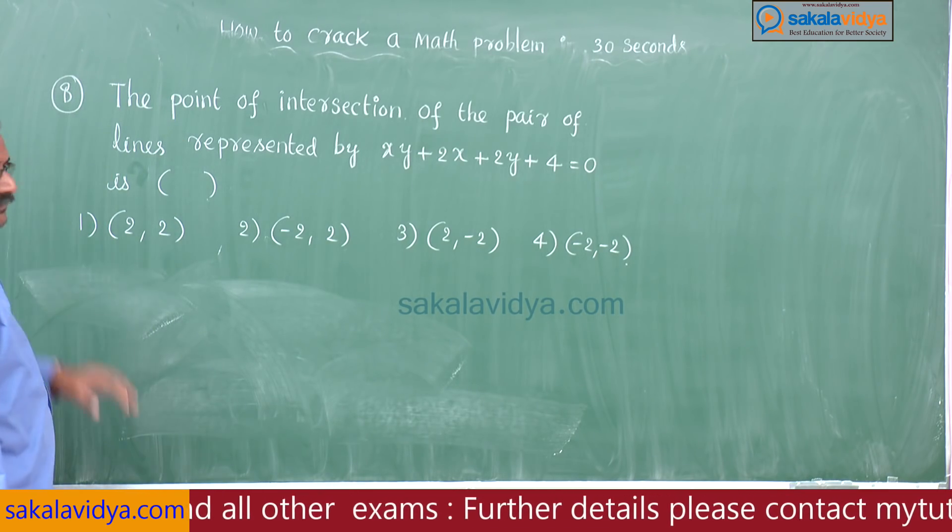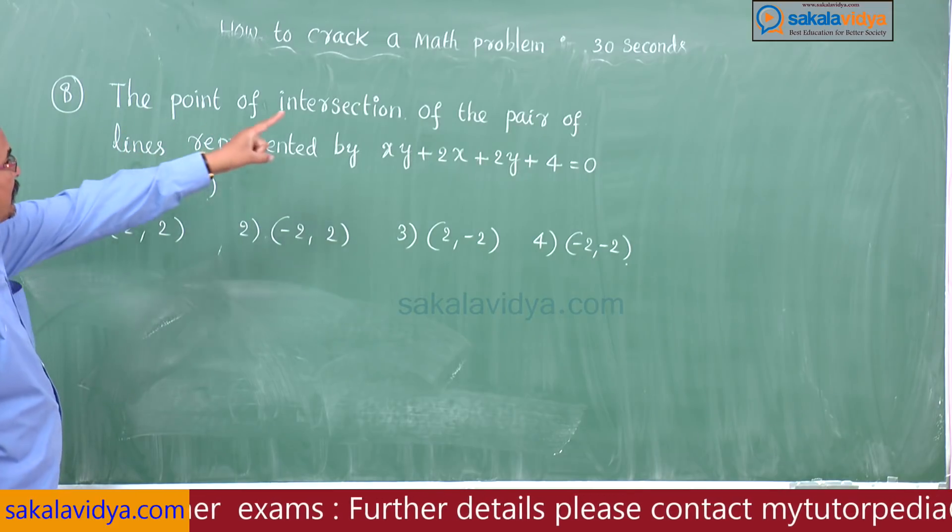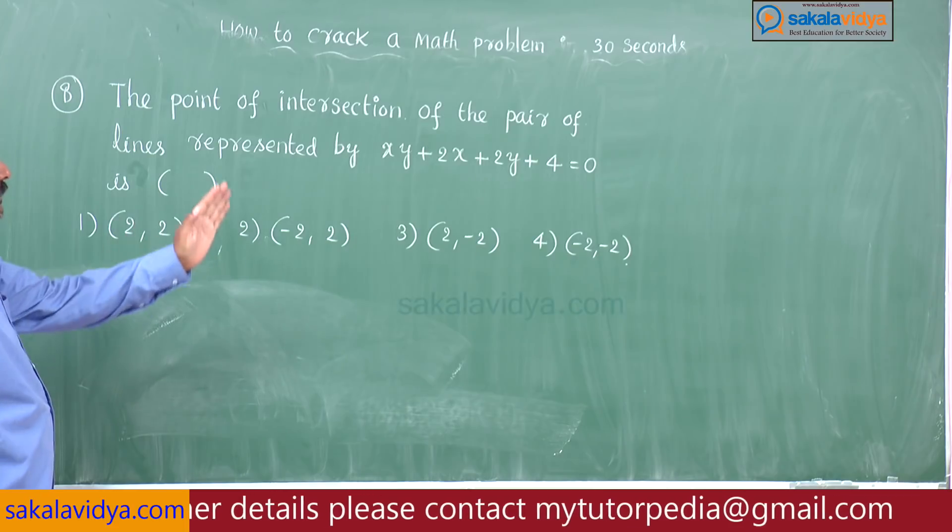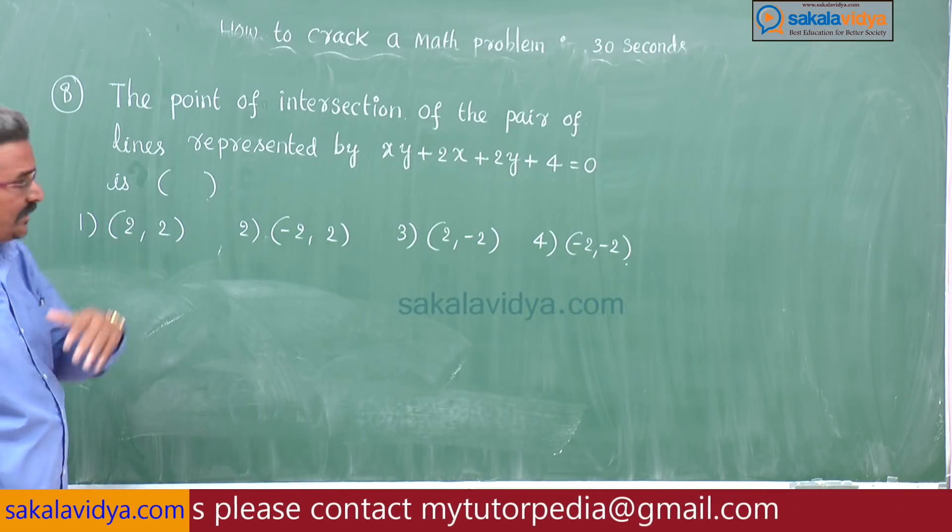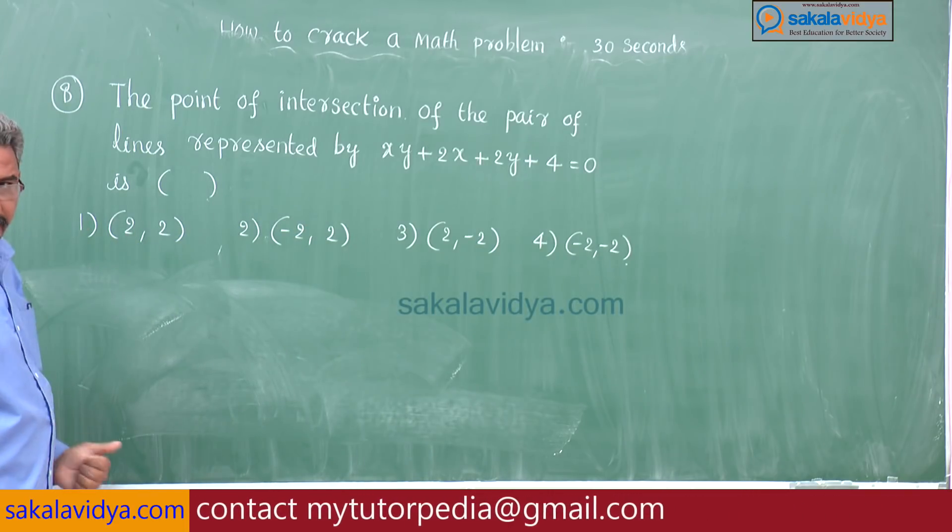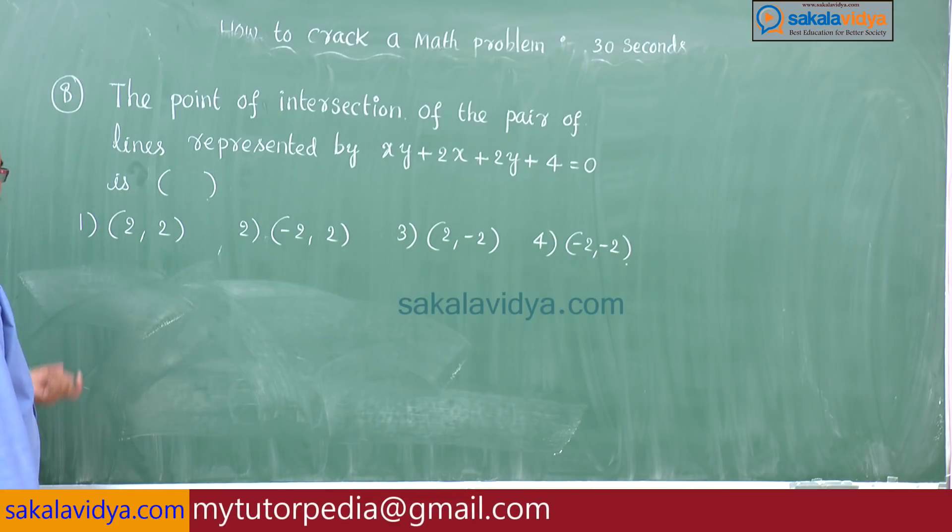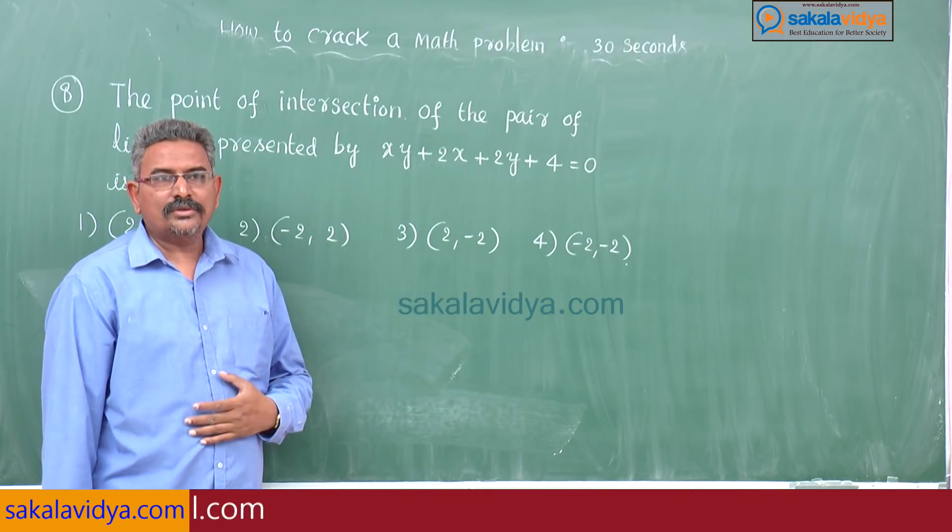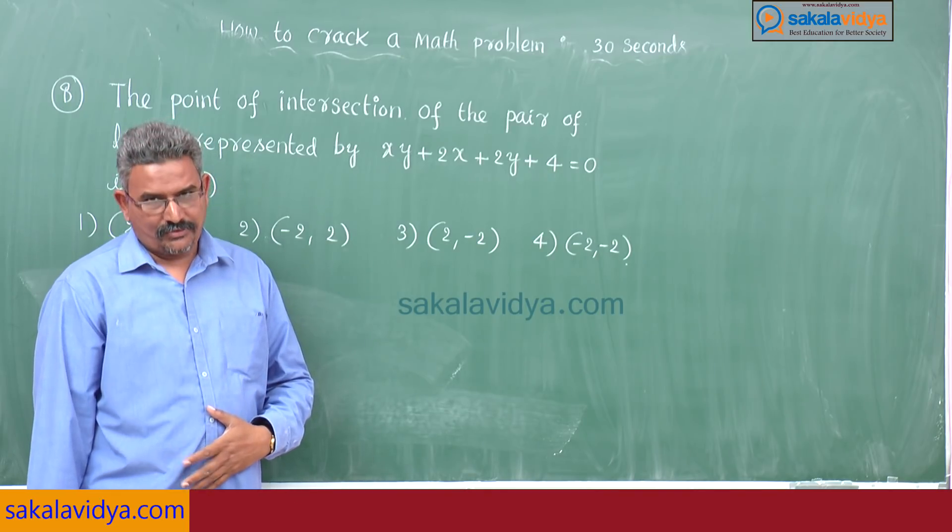Eighth problem: the point of intersection of the pair of lines represented by xy plus 2x plus 2y plus 4 is equal to 0. First option 2 comma 2, second option minus 2 comma 2, third option 2 comma minus 2, fourth option minus 2 comma minus 2.